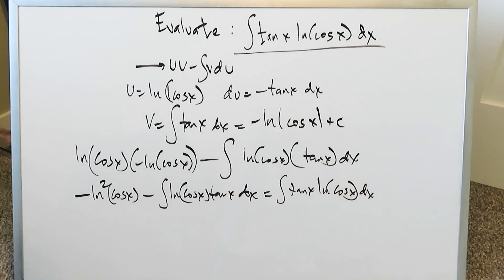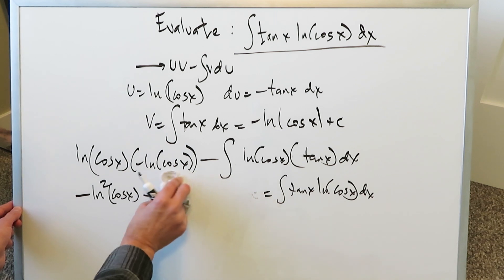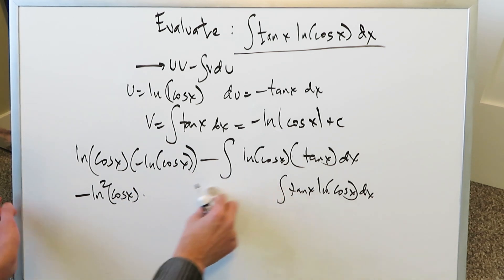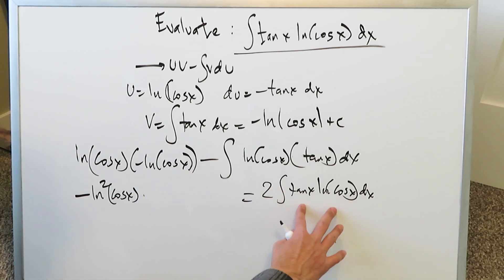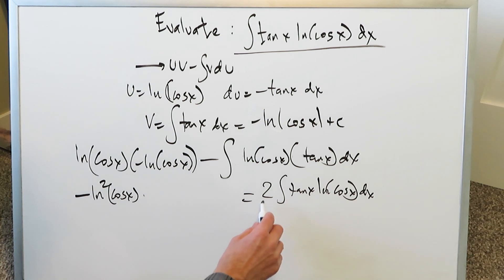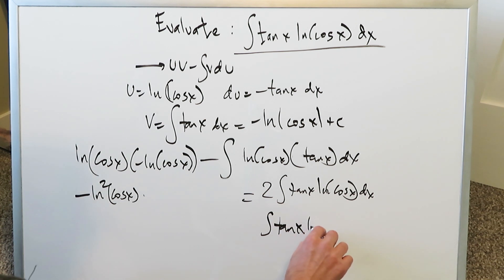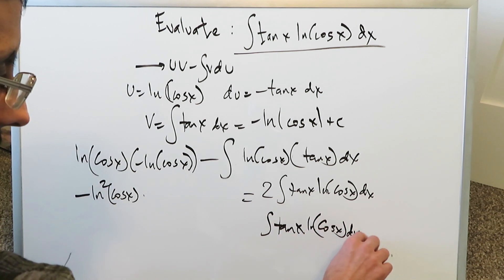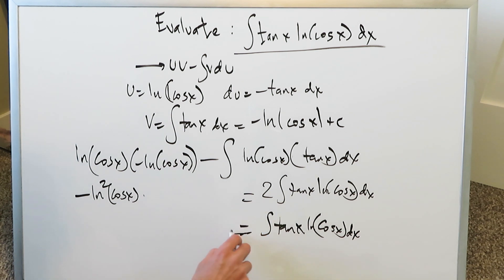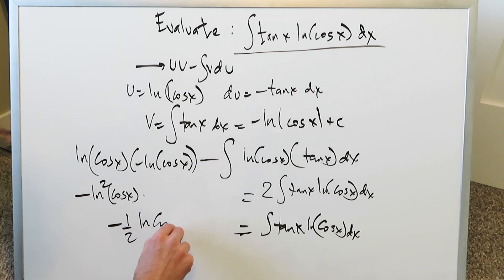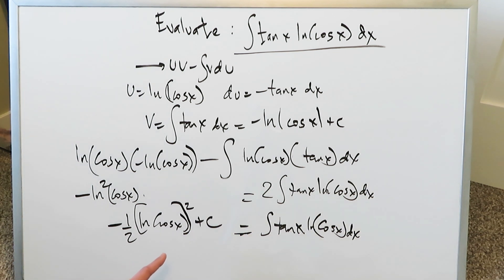Taking this integral to the other side — since you have a minus here, it becomes plus when you add it to the other side, bringing a coefficient of 2. You're still solving for that original integral. Divide both sides by 2: the integral of tan(x) times natural log of cosine(x) dx equals minus 1 over 2 times natural log of cosine(x) squared, plus C.